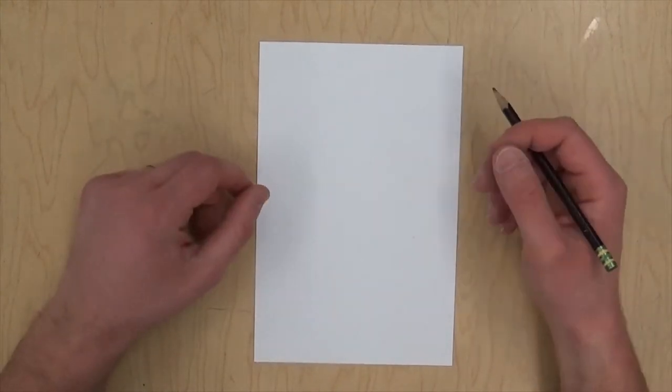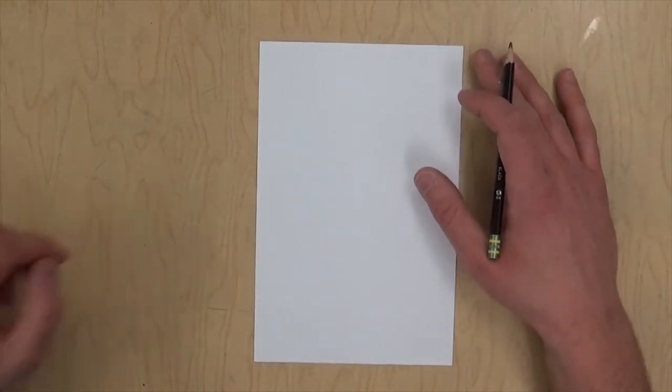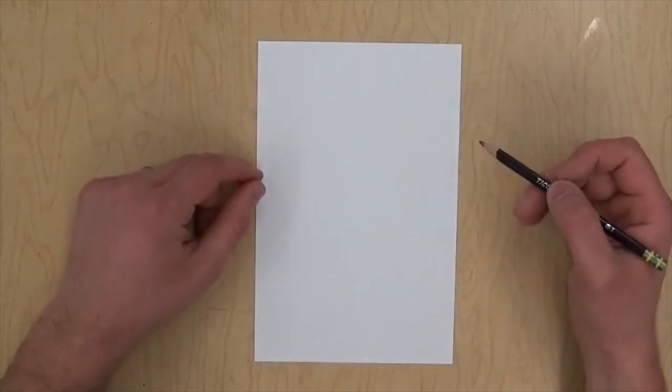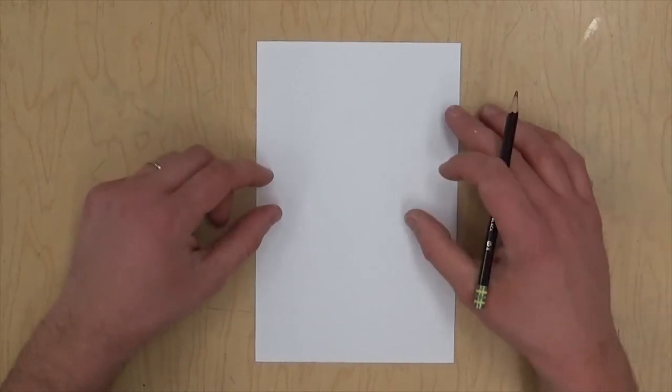It's almost like a name tag, so it's got somebody important's name written in it, like a Pharaoh or somebody important. And it's written not in English, but in Egyptian hieroglyphics. So that's what we're going to do.